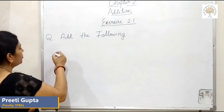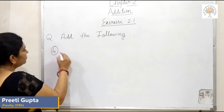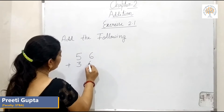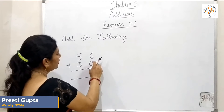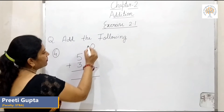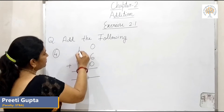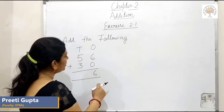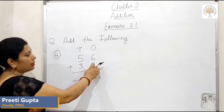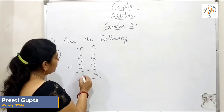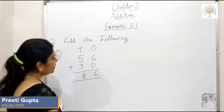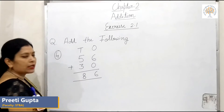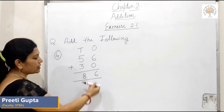Question number 4: 56 plus 30. 6 and 0 are in the 1's place, and 5 and 3 are in the 10's place. 6 plus 0 is equal to 6 — when we add any number with 0, the number remains the same. 5 plus 3 is equal to 8. So the answer is 86.